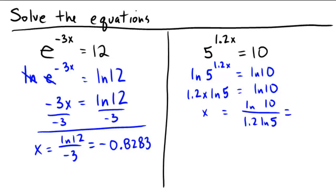We're already done! But if you want a decimal answer for that one, ln of 10 divided by 1.2 ln of 5, if you put this in your calculator correctly, should come out to be 1.1922.